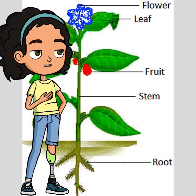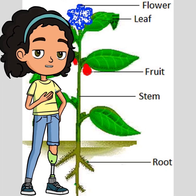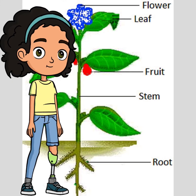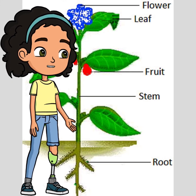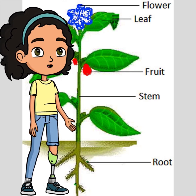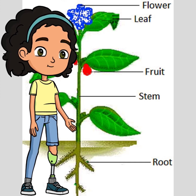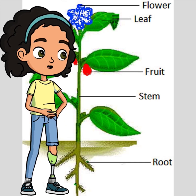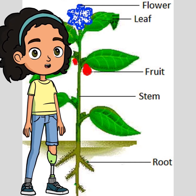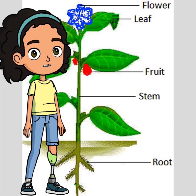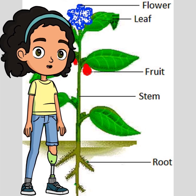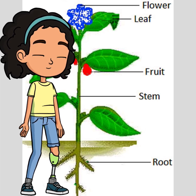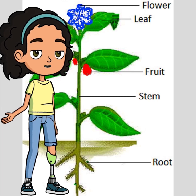Today we're exploring the external parts of a plant, from roots to flowers. Let's start with the roots — they anchor the plant in the ground and absorb water and nutrients from the soil, helping the plant stay strong and healthy.